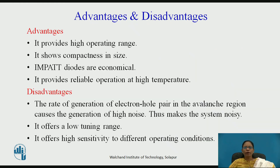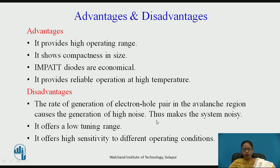Advantages of the IMPATT diode: it provides a high operating frequency range, shows compactness in size, is very economical compared to others, and provides reliable operation at high temperatures. Disadvantages: the rate of generation of electron-hole pairs in the avalanche region causes the generation of high noise, since avalanche is a noisy process, making the device noisy. It also offers a low tuning range and high sensitivity to different operating conditions.